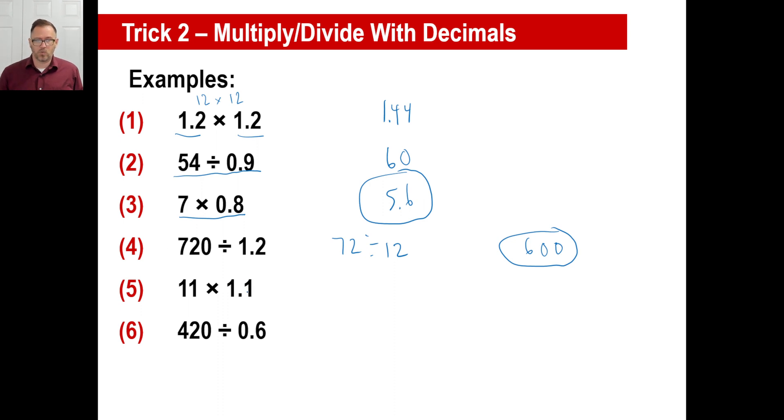Last two. 11 times 1.1. I mean, 11 times 1 is 11, right? So ignore this and go 11 times 11. That's 121. What's going to make this close to 11? Right there.